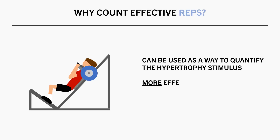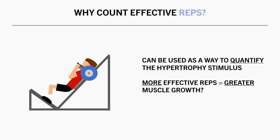Hypothetically, a training routine that accumulated more total effective reps throughout the week for a muscle group would experience greater muscle growth. However, is this model really accurate and is this the best way to quantify the training stimulus? To start answering these questions, the first variable we need to look at is proximity to failure.